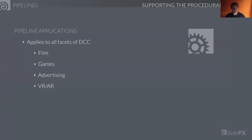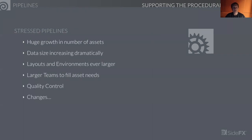Pipeline applies to all facets of digital content creation — film, games, advertising, VR and AR. Pipelines are now stressed. We hear about crunch all the time, which means users making up for mismanagement within pipelines or requirements that have gone well beyond the original design intent. A lot of pipelines are designed to be linear — there's no proceduralism in them, so when you need more assets, you need more people or more time. Huge data size requirements are growing dramatically, and larger teams are required.